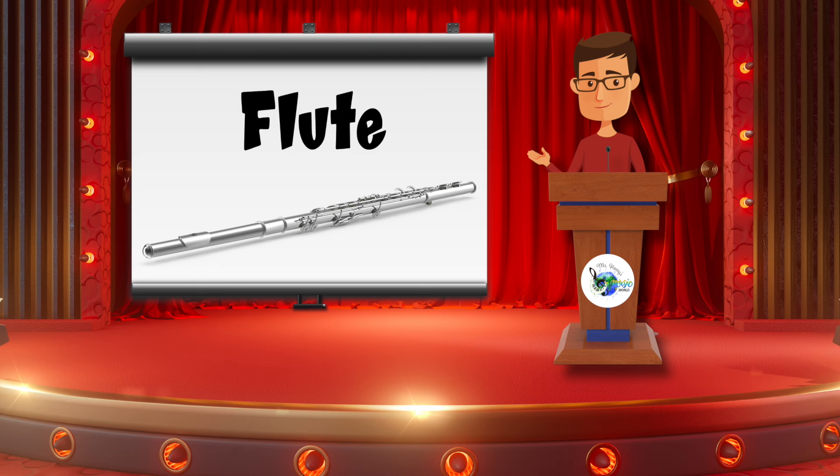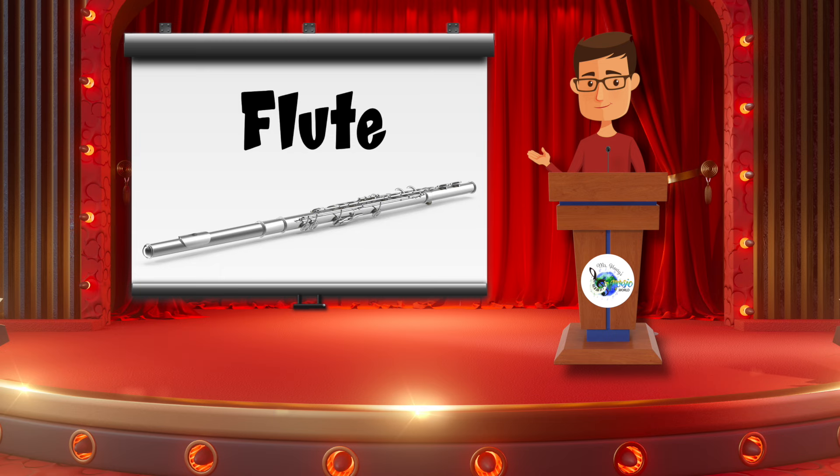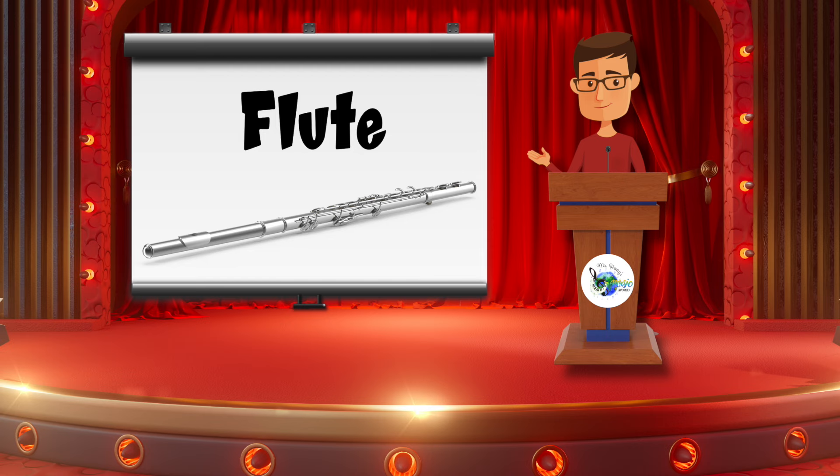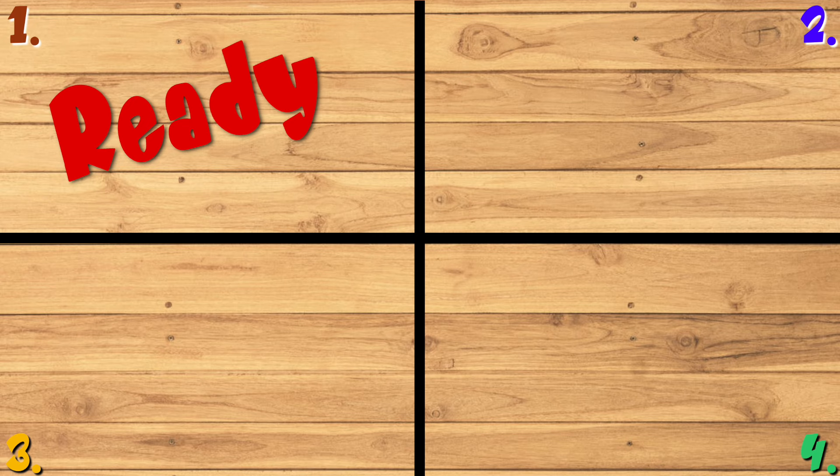The flute is made of metal like copper, nickel, silver, and even gold. It is part of the woodwind family. Long ago, flutes were made of wood and, of course, you use your wind or air to play them, which is why it is part of the woodwind family. On to the next round — ready, set, go.